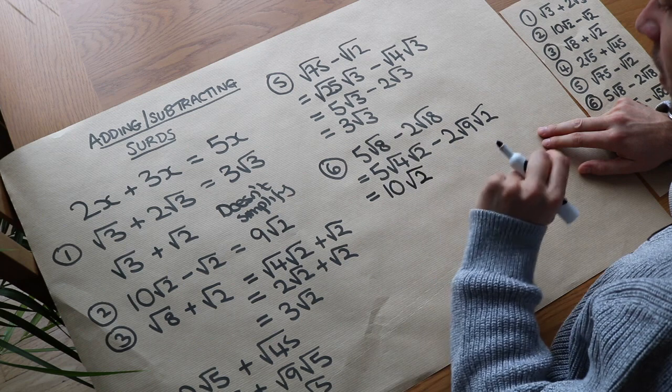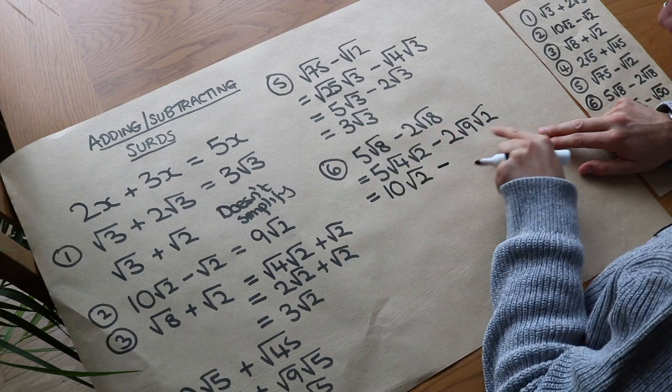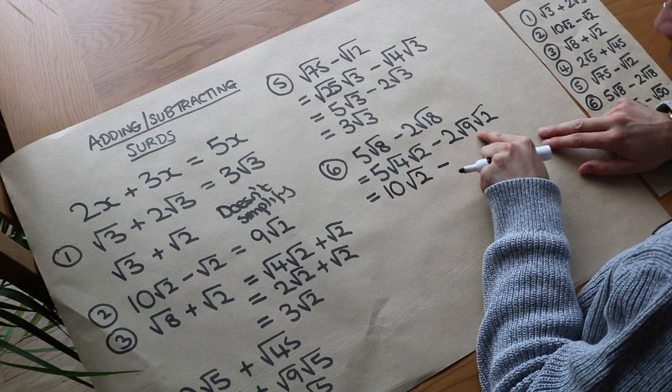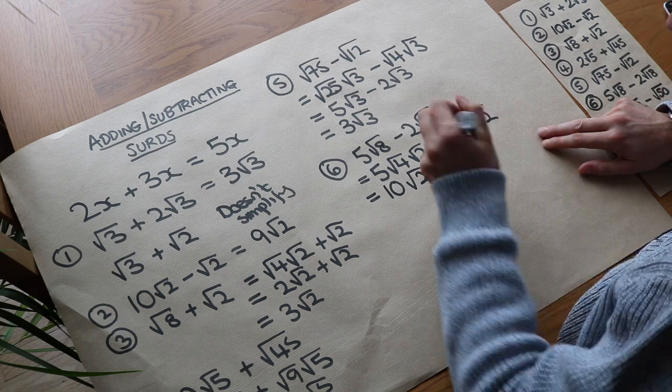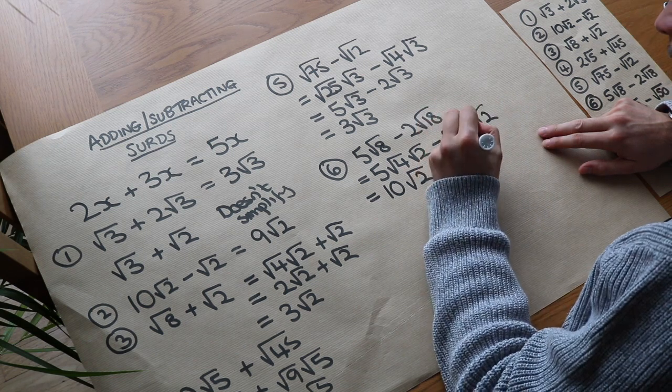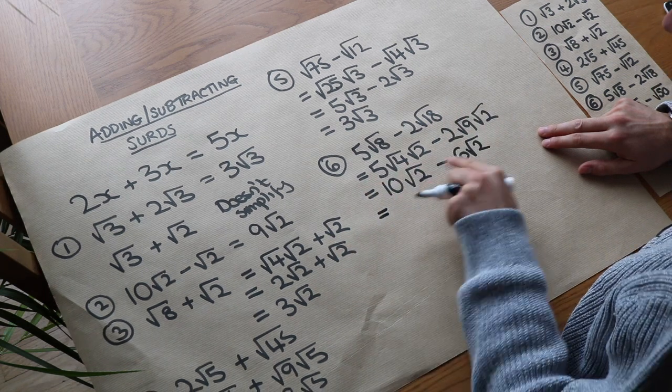So just combine the non-surds together when you're timesing them, and that is 2 times 3. The square root of 9 is 3. 2 times 3 is 6, so it's 6 root 2 minus 6 root 2. So we've got 10 lots of root 2 minus 6 lots of root 2. That's 4 lots of root 2.